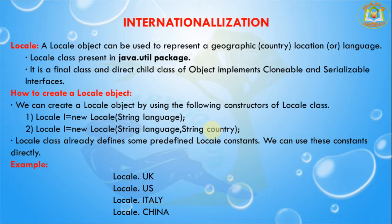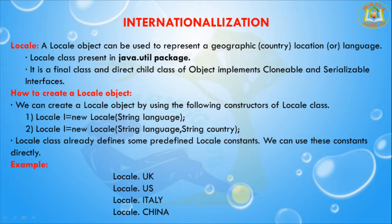The two arguments are language and country. The Locale class already defines some predefined Locale constants we can use directly. Those are: Locale.UK, Locale.US, Locale.ITALY, and Locale.CHINA.